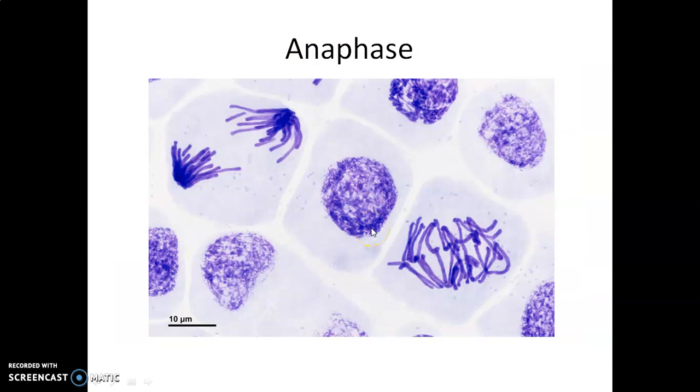Next one, anaphase. See this is anaphase. Here you can see prophase, metaphase and anaphase. Children this is the cell at the stage of anaphase. What is anaphase? Here each chromosome is arranged at the metaphase plate.